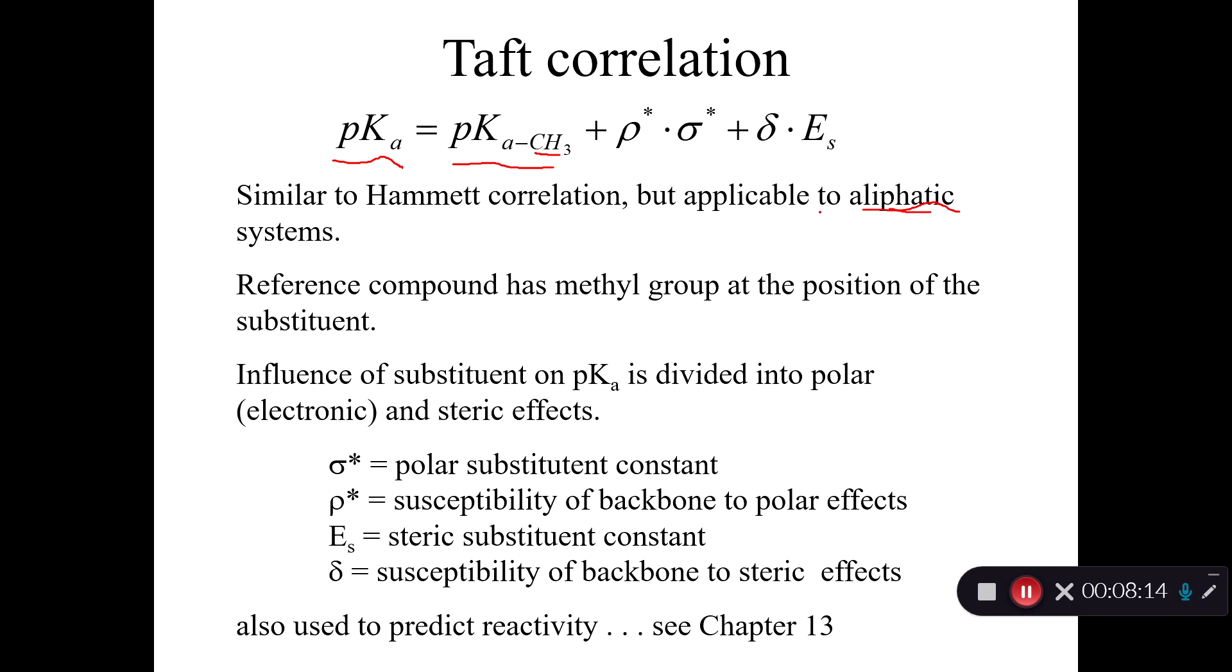But the difference, because we are dealing with an aliphatic compound instead of a benzene ring, we have to consider both the electronic effects, the polarity of the substituent, which is accounted for here. We have something very similar. We have a rho, which is a slope term, and we have a sigma, which is kind of like a Hammett constant. That accounts for the polarity effects. But then we also need something to account for steric effects. So we have delta here, which is the susceptibility of the backbone to steric effects. So it's analogous to the rho term. It's a slope term. And then we have ES, which is the steric substituent constant.